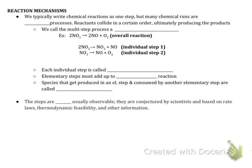Hi AP chemistry students, we're looking at reaction mechanisms in the chapter 12 notes. This concept is a little funky, so bear with me. We normally write chemical reactions as one step no matter how many reactants are involved, but what scientists find is that many chemical reactions are actually multi-step processes, meaning the atoms collide in a certain order — it's like a bunch of little mini reactions happening to give us our overall products.